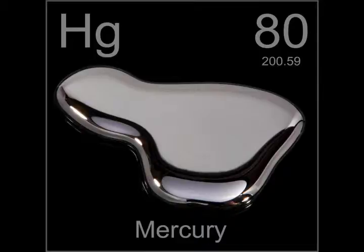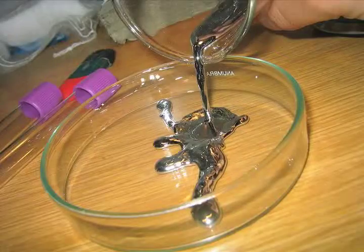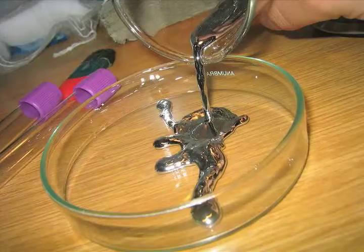Mercury is a naturally occurring element found in the air, water, and soil. Pure mercury is a silvery white liquid metal, sometimes referred to as quicksilver.